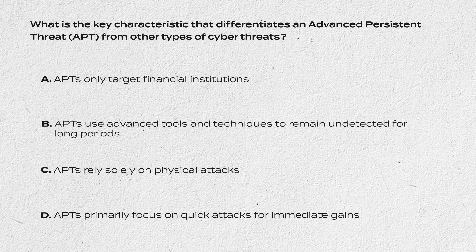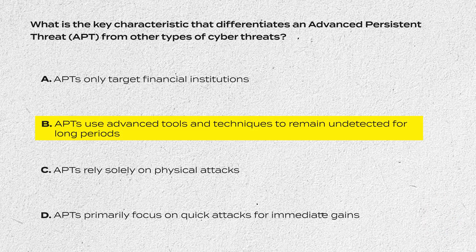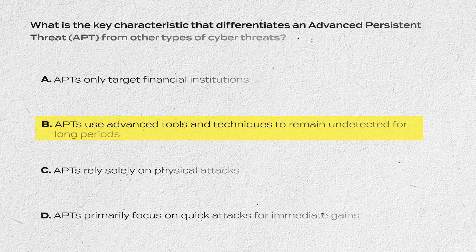Question 1: What is the key characteristic that differentiates an advanced persistent threat from other types of cyber threats? A: APTs only target financial institutions. B: APTs use advanced tools and techniques to remain undetected for long periods. C: APTs rely solely on physical attacks. D: APTs primarily focus on quick attacks for immediate gains. The answer is B — APTs use advanced tools and techniques to remain undetected for long periods, known for staying hidden within a system for extended periods, unlike attackers who focus on short-term or immediate impact.